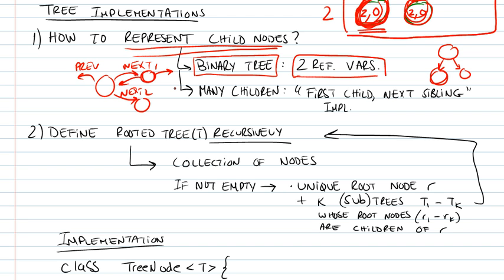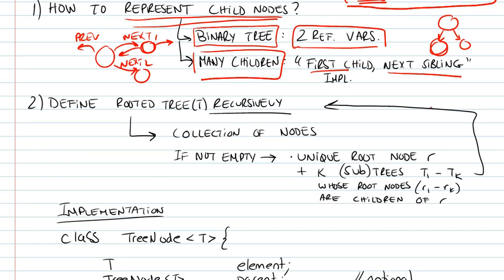Now, this is in terms of binary trees. When we're talking about a tree which could have multiple children, we could use an implementation that is called first child, next sibling. So, the first child, next sibling implementation basically consists of having one pointer that will point to the first child. So, suppose this was our tree.